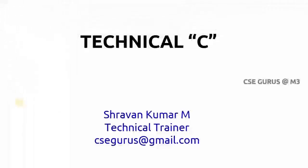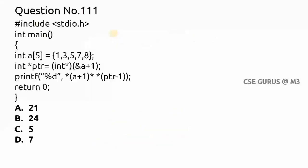Welcome to the video lectures on TechnicalSing. Moving to question 111: here it is given int a of 5, so 5 elements are in an array, and int pointer is initialized with an address. We'll see what the meaning is when we write ampersand a plus one, and how the printf statement will be executed.